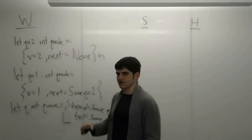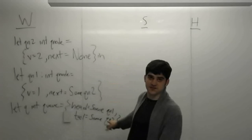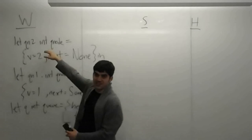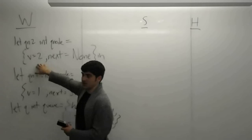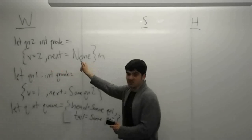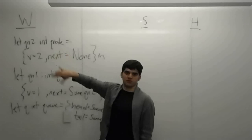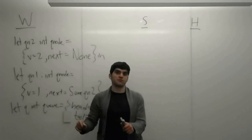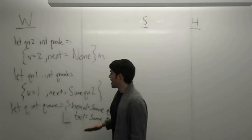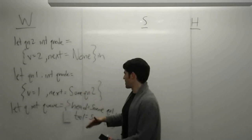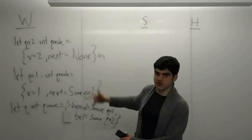So here's the example code that we have. And I'll just run through it really quickly. Let qn2, which is an int q node, be a q node with v equals 2, and next being none. And remember, next in the type definition is declared as mutable, because this is something that we might want to be able to be changed later on. Then we have qn1, which is a q node, with value equals 1, v equals 1, and next being sum qn2.